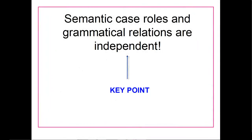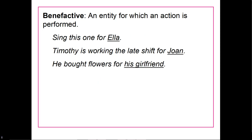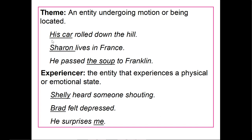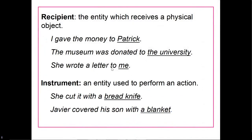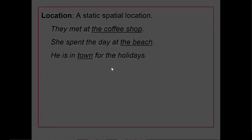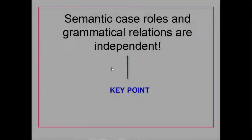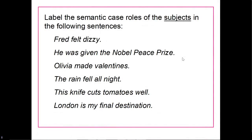Semantic case roles and grammatical relations are independent of each other. For example, looking at theme: his car is the subject, but it is also a theme. The soup is a direct object, but it is also a theme. So just because something has a certain grammatical relation doesn't mean it will have a certain semantic role. Grammatical relation and semantic role are independent.